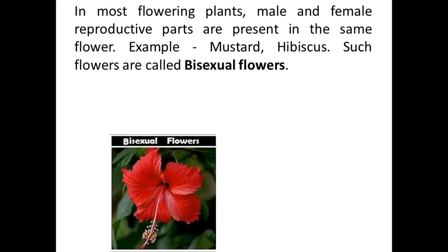In most flowering plants, male and female reproductive parts are present in the same flower. In some flowering plants, both the male part and the female part are present within the same flower. Those flowers are known as bisexual flowers — 'bi' meaning two, so both sexes are present in one flower. For example, mustard and hibiscus.